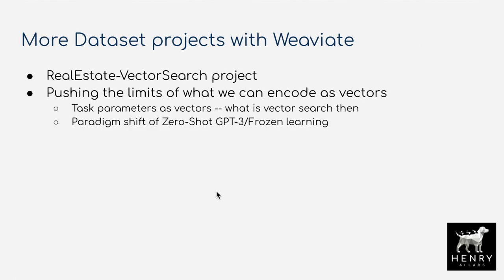Something we discussed in the podcast is multimodal vector search — comparing image embeddings with text embeddings, graph embeddings with text embeddings, and all sorts of other things like audio and images. One project that would be really cool is looking at real estate images and text descriptions of different things you're looking at.